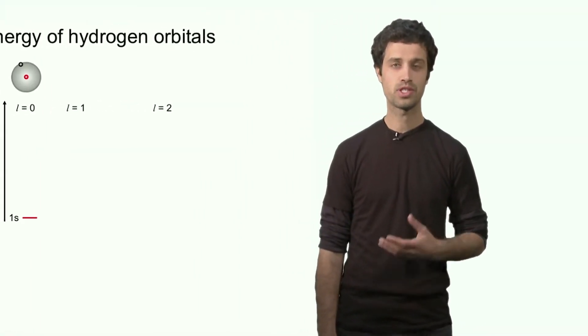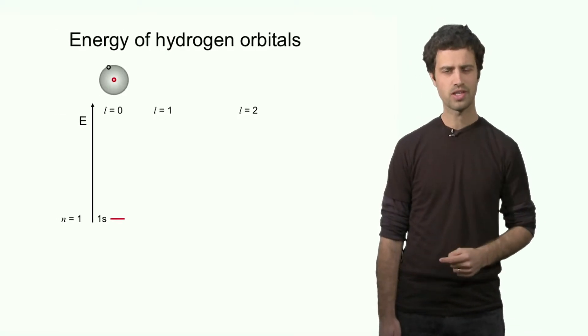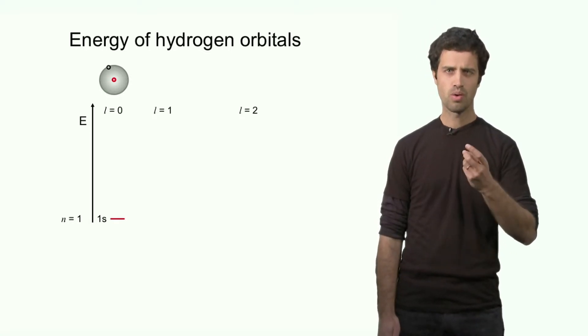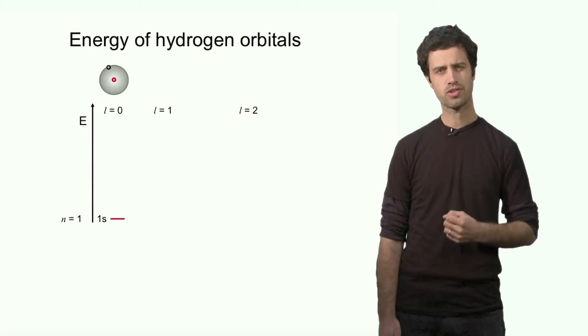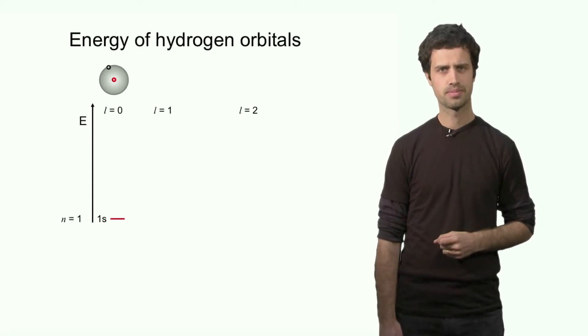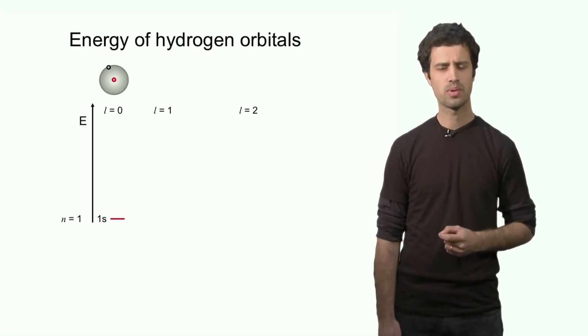We have seen that the region occupied in space by the electron in an atom can be described by a wave function, and this region described by the wave function is also called an orbital. Let us consider the simplest possible atom, which is the hydrogen atom — an atom with one nucleus, which is a proton and a single electron. The question is: what wave function best describes the distribution of the electron in the hydrogen atom? The answer is the wave function or orbital with the lowest energy.